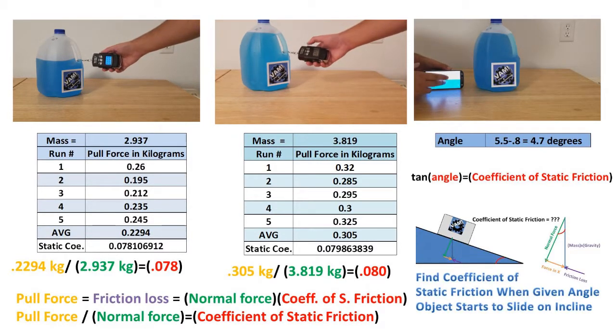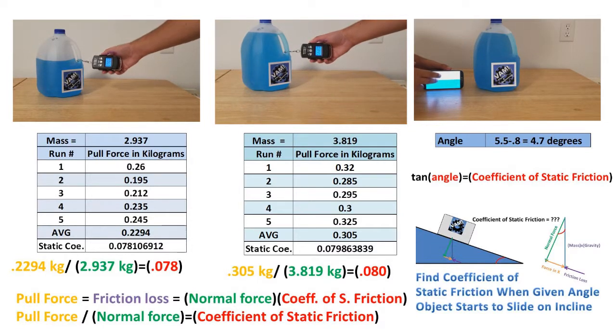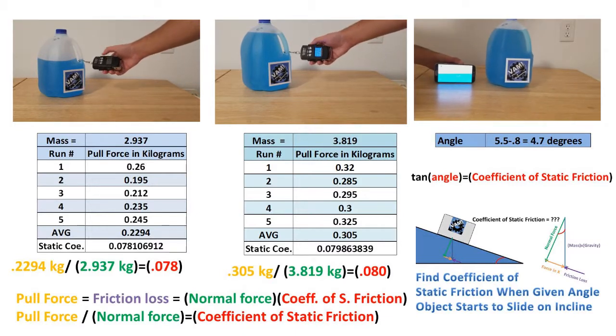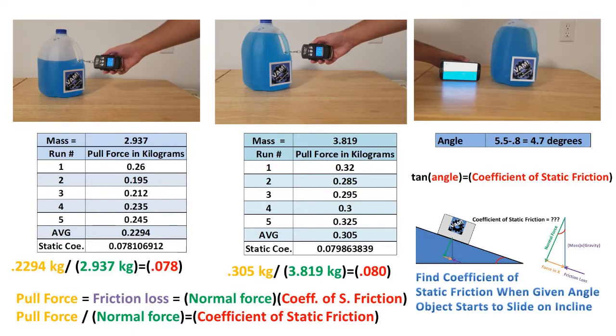Now to finish things off, let's tie down what we learned in the previous video, find coefficient of static friction when given the angle the object starts to slide down incline, to this video. I tilted the surface up at an angle and got an angle just before the object starts to slide of 4.7 degrees.